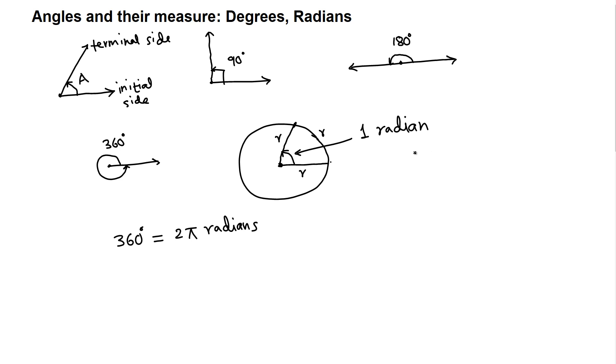Radians are important later in calculus, that's why we're interested in learning radian measure as well. Now we need to know how to convert between degrees and radians. From this relation, 360 degrees is 2π radians.